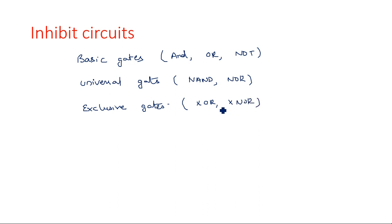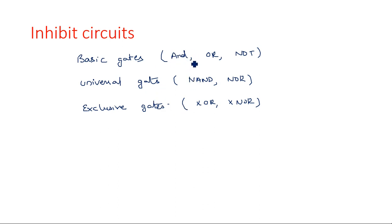XOR and XNOR gates are exclusively used for parity checking, error detection, and correction. Whenever an odd number of ones are present at the input, output is one for XOR and zero for XNOR — they are complements of each other. In total, seven gates can be used.